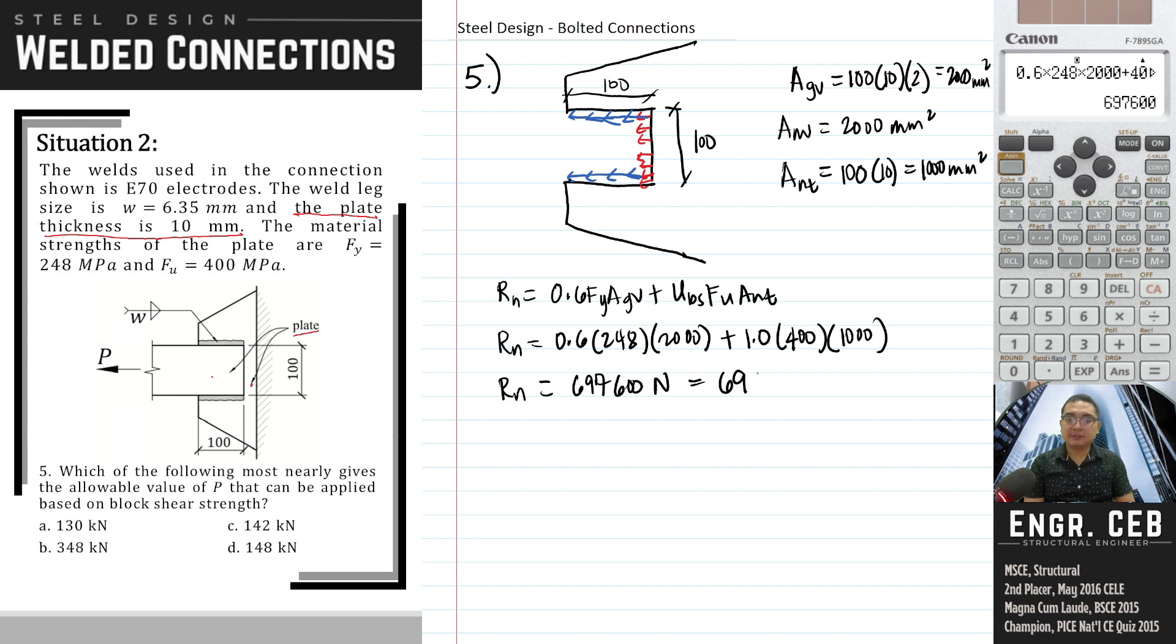In kilonewtons, this is 697.6. Allowable value again, compare the demand to capacity. The demand based on the figure is P and the capacity is, for block shear, we just divide 697.6 by the factor of safety, which is 2. Therefore, the allowable value of P is 348.8 kilonewtons. And that is letter B.